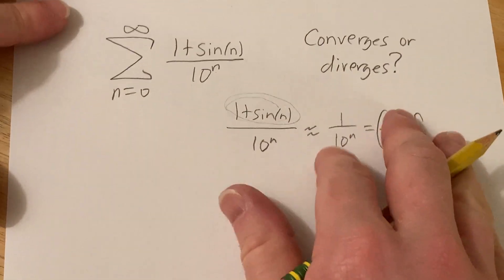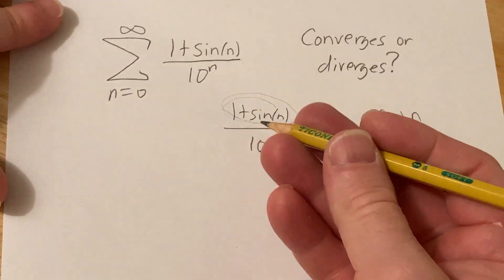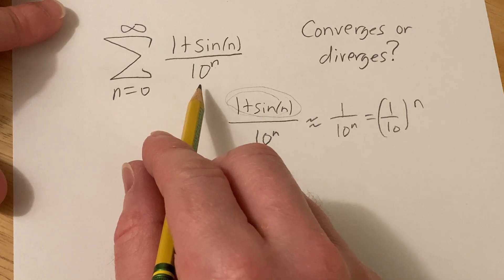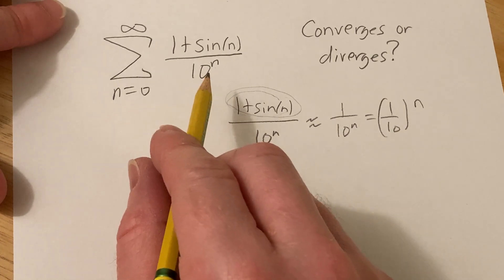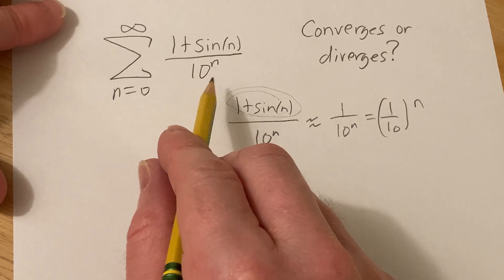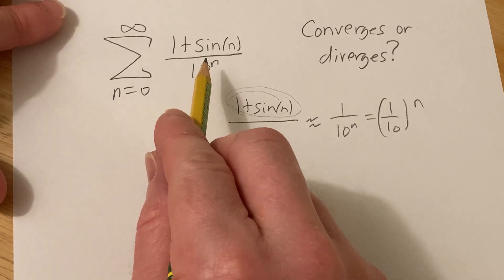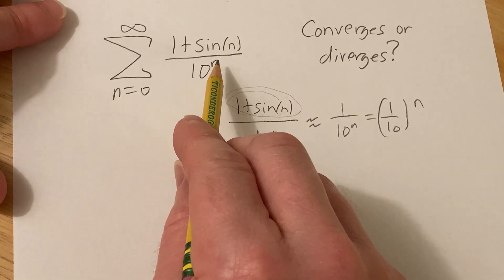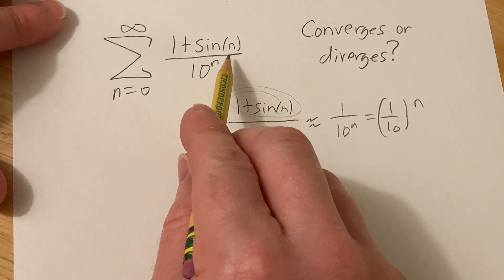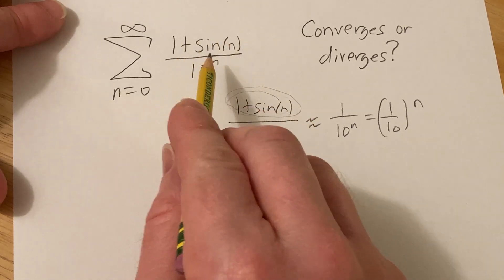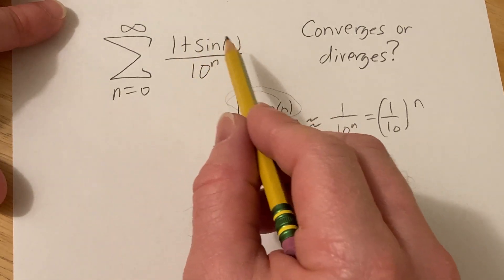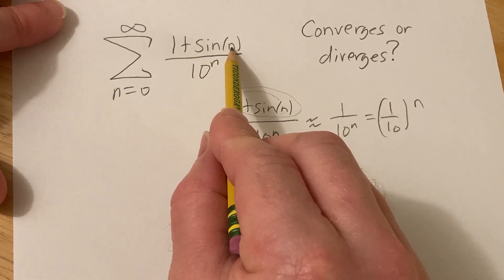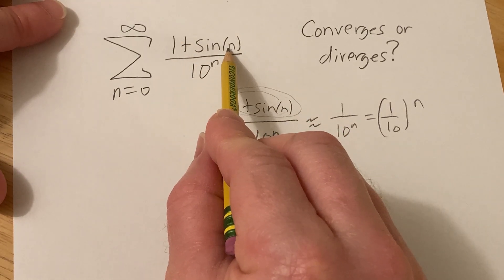To formally show convergence, we're going to use something called the direct comparison test. One of the assumptions in the direct comparison test is that you have only positive terms. Note that this series is always going to be positive.